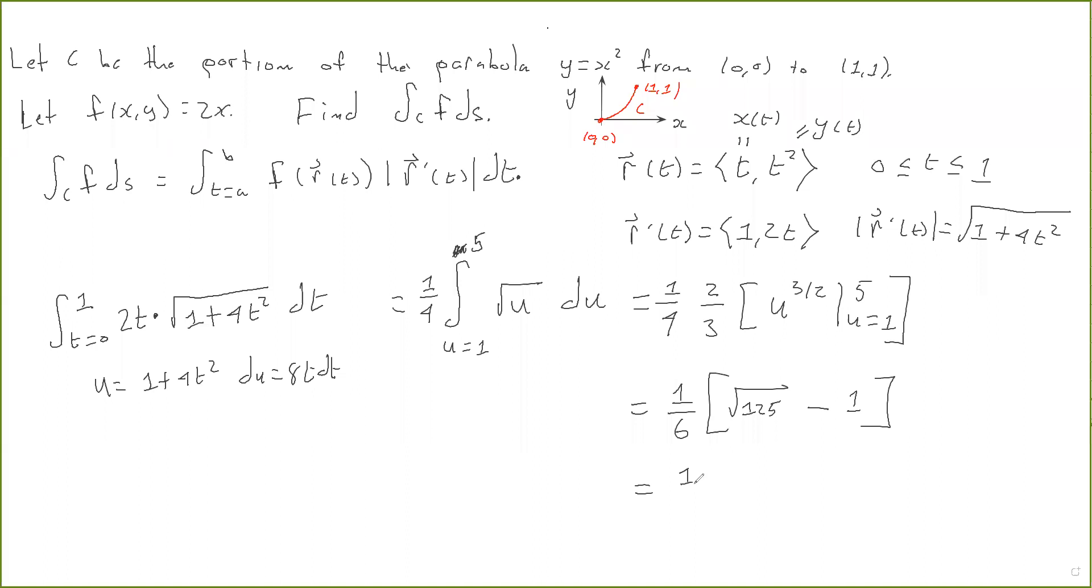And if you want, you can simplify this a little bit more. So 125 is 5 times 5 times 5. That's just 5 cubed. That's what we did up here. So this is going to be 1 sixth times the square root of 125, which is 5 times the square root of 5 minus 1. And that is the final answer.